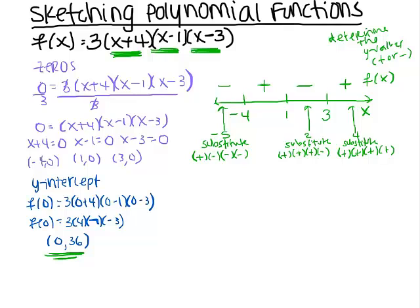So I've now displayed the kinds of y-values on my function. From negative infinity to negative 4, I have negative y-values. From negative 4 to 1, positive y-values. From 1 to 3, negative y-values. And from 3 to infinity, positive y-values. Now the big question is: what does this look like if I were to graph it? So let's do a quick sketch.